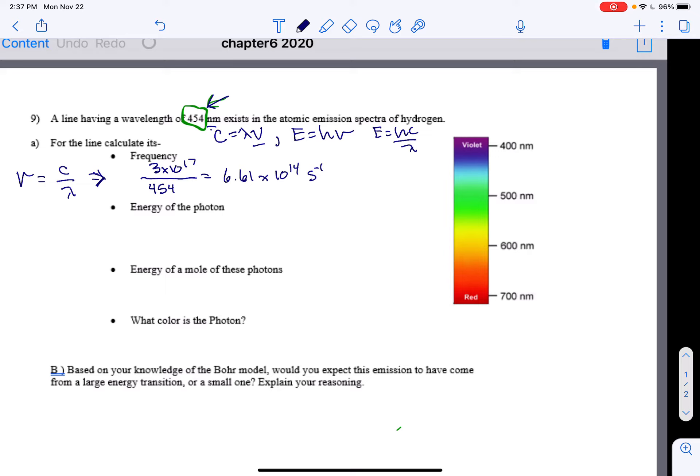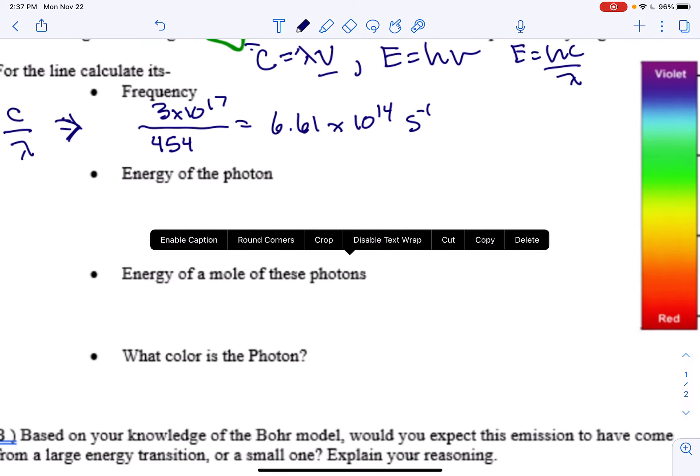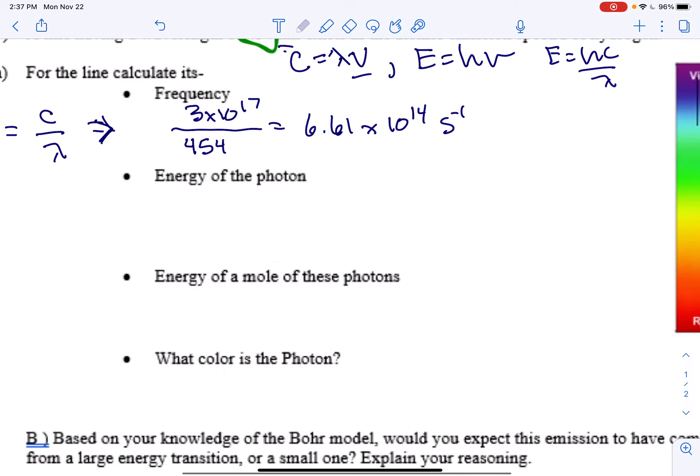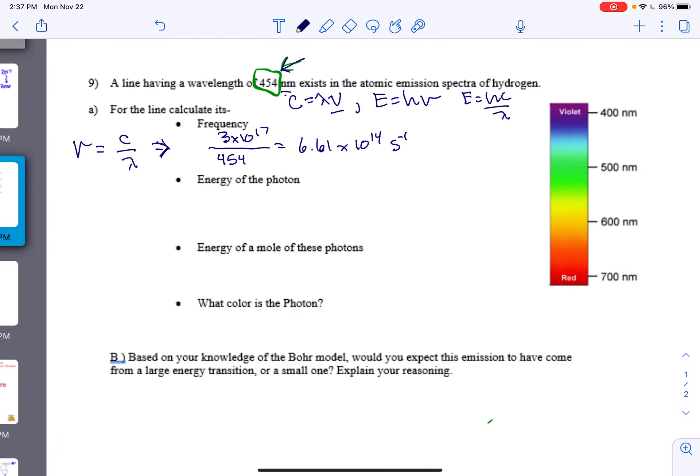The energy of the photon, I would use E equals hv, where h is Planck's constant. Planck's constant is 6.63 times 10 to the negative 34th.